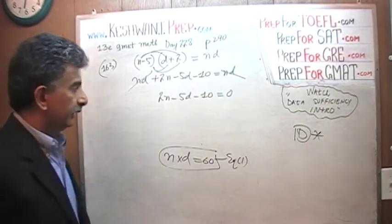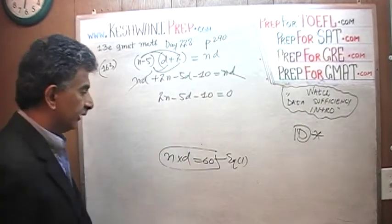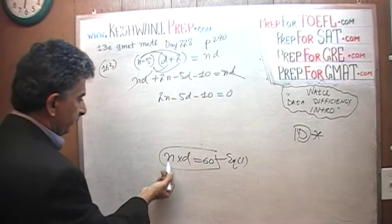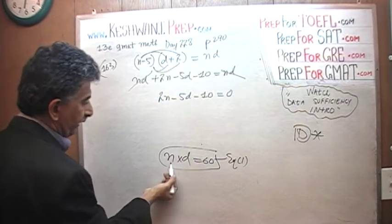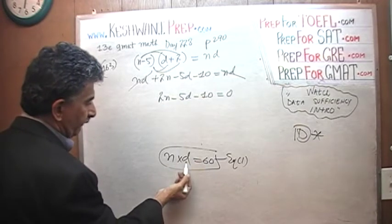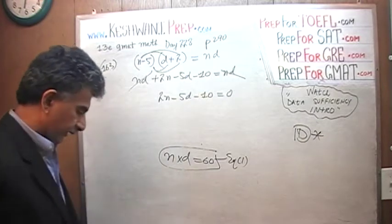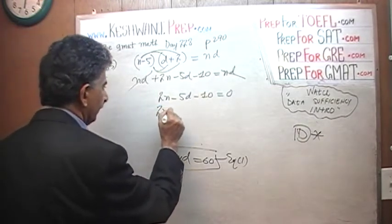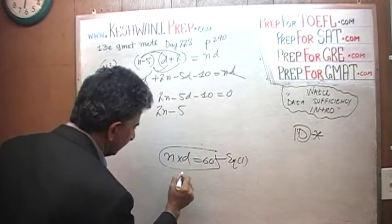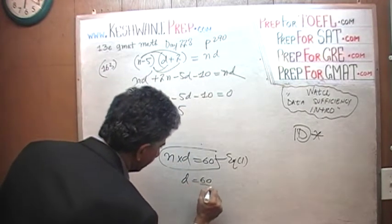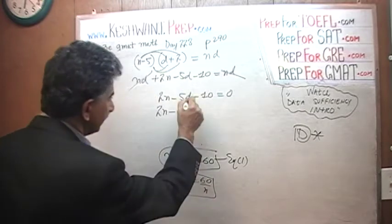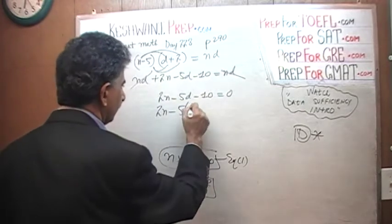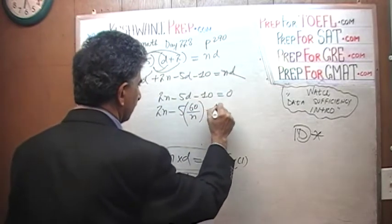Now, since we have two variables here, N and D, we can't really do much with it, so we have to replace one variable in terms of the other. We can do it either way. We can either replace N in terms of, we can say that N is equal to 60 over D, or we can say that D is equal to 60 over N, either way. So, let's replace the D. So, 2 times N minus 5 times D, D here is 60 over N. I'm going to put that in here, 60 over N minus 60.